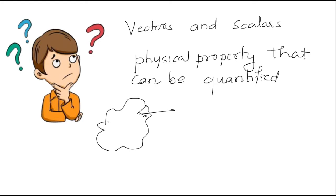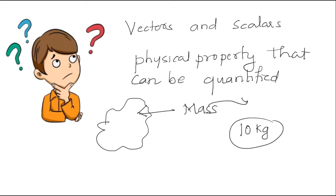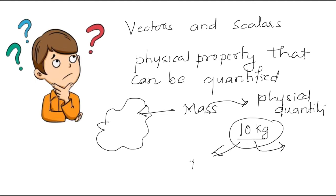We describe an object by its mass, and we say this object has a mass of 10 kg. So mass is a physical quantity which can be quantified. And what does this 10 kg represent? 10 kg represents magnitude.